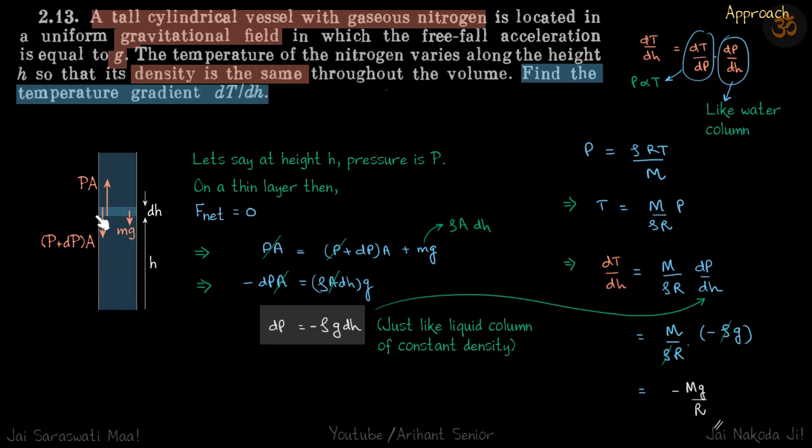Now on this thin layer which is at rest we can say F net is zero, which means PA, the upward force, is equal to the downward force. So PA is equal to P plus dP into A plus mg. So let's read this also: at height H pressure is P, so on a thin layer F net is equal to zero.